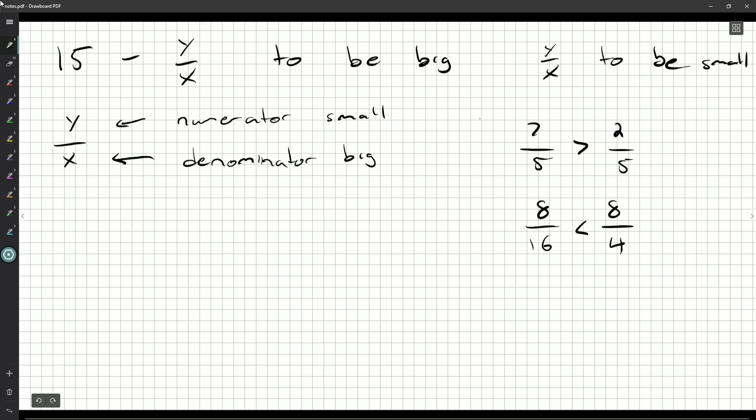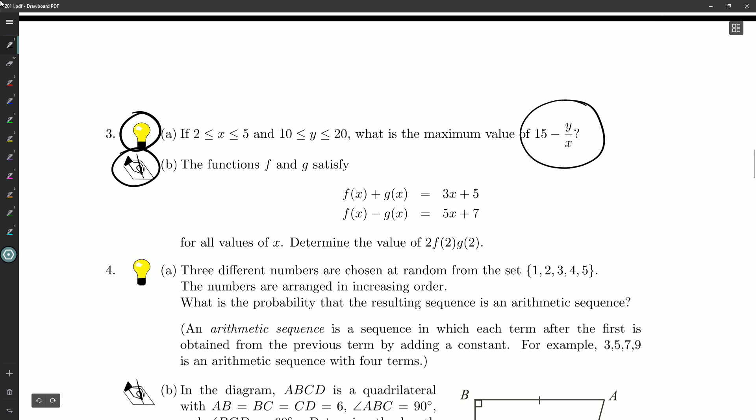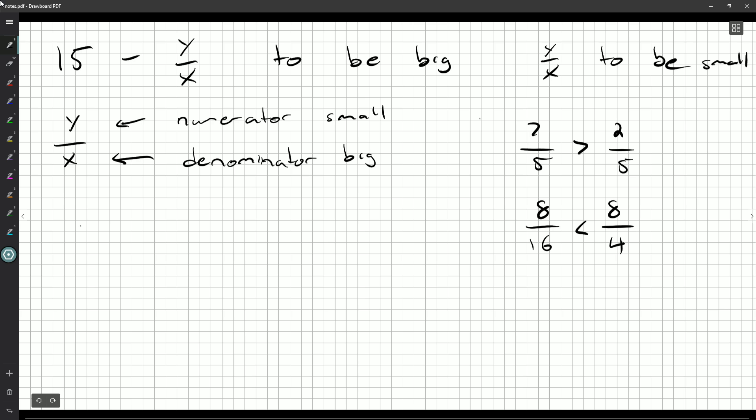So okay, now what do we know? We know Y is between, I think it was 10 and 20. X is between 2 and 5, so we want X to be as big as possible, and we want Y to be as small as possible. So 15 minus Y over X, the biggest that that can possibly be is 15 minus 2, which is 13. Okay, there we go. That's our A part done.